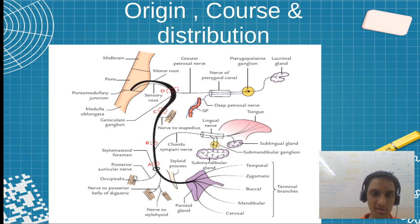This is the origin, course, and distribution. One more thing: PP ganglion will supply, from that the nerves coming out supplying the lacrimal gland, and here supplying the tongue, taste sensation for the tongue. This is about the course.